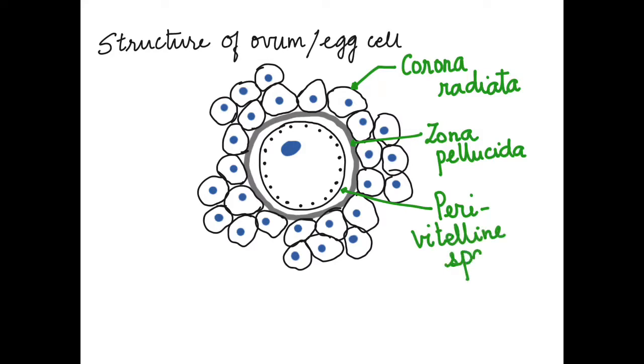The plasma membrane of the oocyte is called the vitelline membrane.